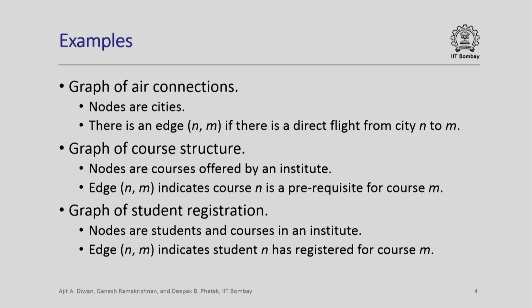Let us look at some examples of graphs. Consider a graph of air connections: the nodes are cities in the country, and there is an edge from node n to node m if there is a direct flight from city n to city m. An airline can represent their flights by a graph depending on which cities the flights connect. Another example: if you look at courses offered in an institute, the nodes are the set of all courses, and an edge (n, m) indicates that course n is a prerequisite for course m.